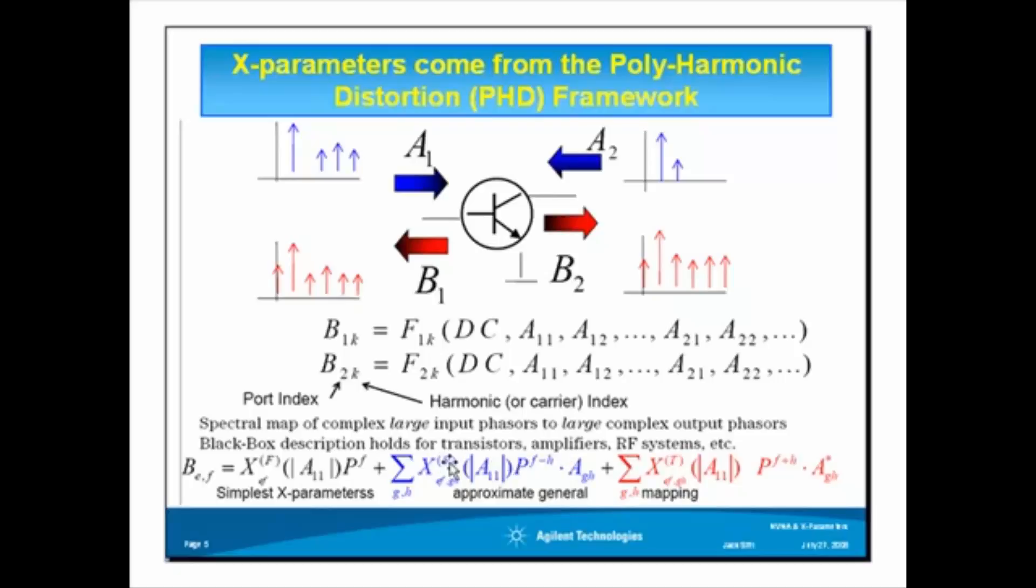In the hot S parameters, you inject large signal at the input of the device, and you inject a small signal at the output of the device, at the output port, with a small offset frequency to measure that behavior, or the reflected wave, the S22. But, it was found that the hot S parameters is not sufficient to capture device characteristic under highly nonlinear condition.